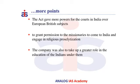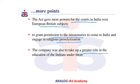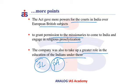The Act also gave more powers to courts in India over European British subjects. For the first time, it granted permission to missionaries to come to India and engage in religious proselytization. This was also the first important step taken by the British Parliament towards education, where the company was to take a greater role in educating Indians — allocating a grant of 1 lakh rupees per annum for the purpose of education in India.